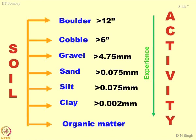Lesser the particle size, we say that the activity of the system is quite high. There is a hidden effect which says that the system is not so passive — it is very active. Each component of the soil mass has some activity associated with it.